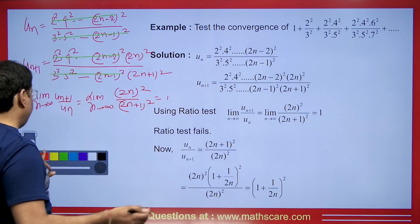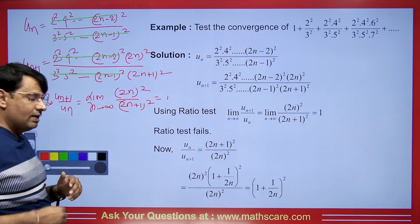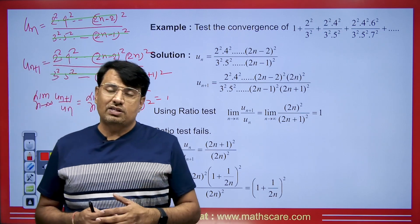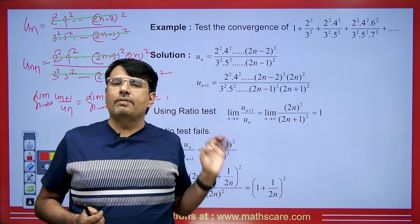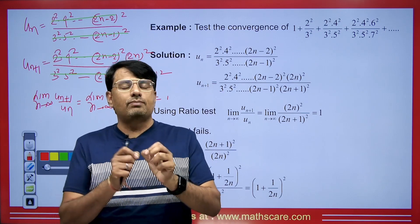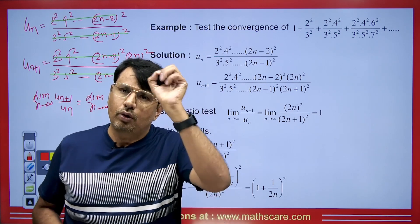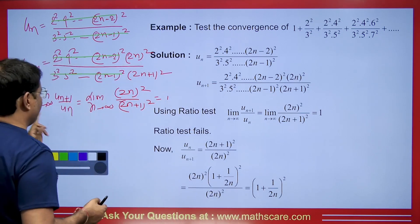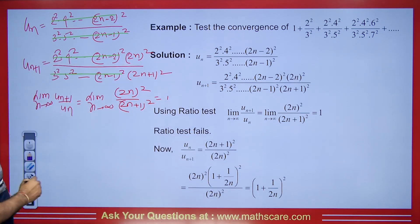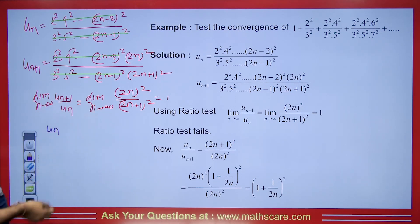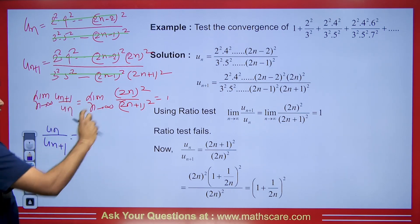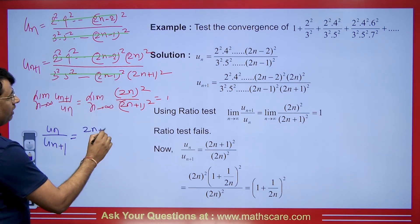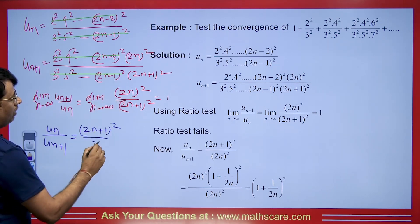When the D'Alembert ratio test fails, we have other tests like the logarithmic test, the second logarithmic test, and Raabe's test. But we also have the Gauss test. Most of the time the question will ask you to use the Gauss test specifically. Now since D'Alembert ratio test has failed, we apply the Gauss test. We find u_n/u_{n+1} by reversing the ratio, giving us (2n+1)²/(2n)².